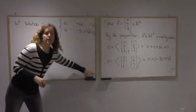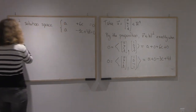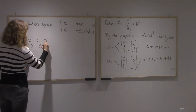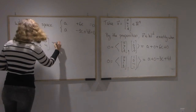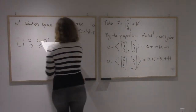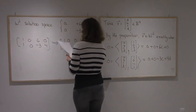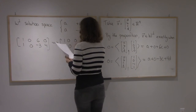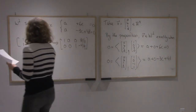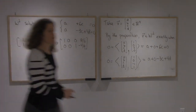So we've turned the language about inner products and perpendiculars to the subspace into a system of two equations. W-perp is the solution space — since it's a homogeneous system — of A + 6C = 0 and A - 3C + 4D = 0. We know how to find a basis for a solution space: I just need to reduce the system using a matrix. I have the reduction here: the reduced matrix gives rows (1, 0, 0, 8/3) and (0, 0, 1, -4/9).